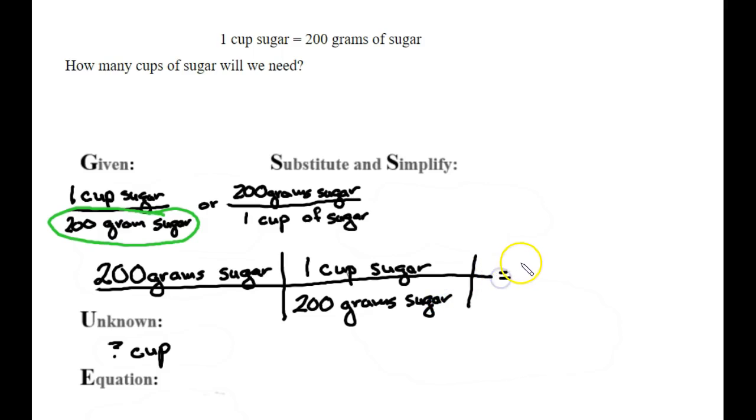When you do the math, you're going to see that you get 200 times 1 over 200. Now you're welcome to put that on your calculator, but when you do, you're going to get 1. And that's fine.